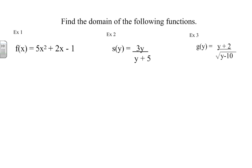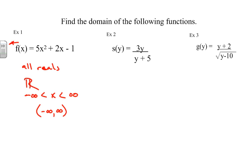Let's go through some examples of how to find a domain using that four-step process. We identify our function — example number one — and we look at it and say it's all reals. There are many different ways of writing all reals: you can say 'all reals,' write it in set notation, go from negative infinity to infinity, or use interval notation. All of these refer to the domain being all real numbers, because this function has no denominator and no square root — the implied domain is all real numbers.